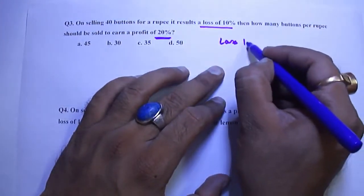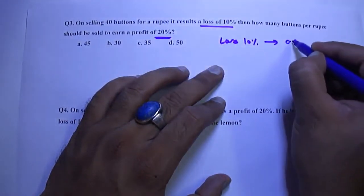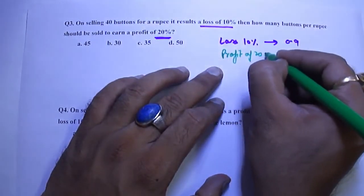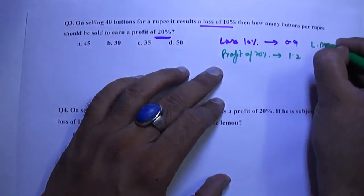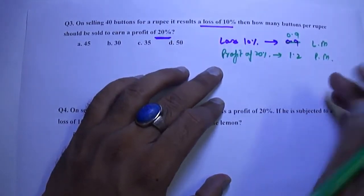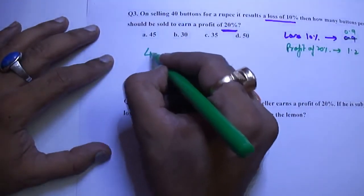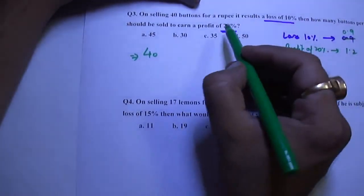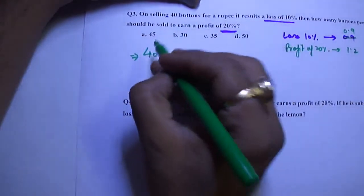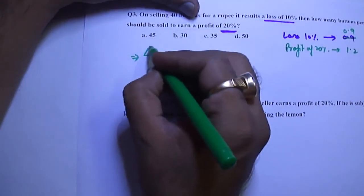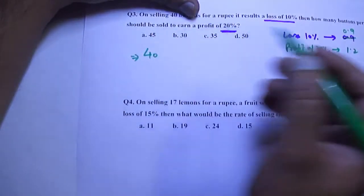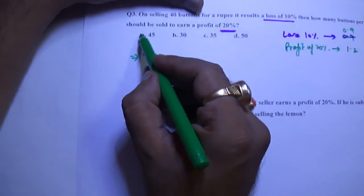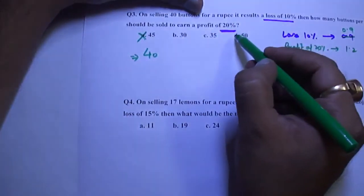Loss of 10%, the loss multiplier would be 0.9. And profit of 20%, the profit multiplier would be 1.2. Initially we are selling 40 buttons and we get a loss of 10%. Now my question is, if you want to get a profit of 20%, should we sell more buttons or less buttons? We are getting loss by selling 40 buttons. To get profit, we should sell less buttons. So we have to calculate the number of buttons which is less than 40. In these options, A is not possible because it is more than this and D is also not possible. We have two remaining options that is B and C.